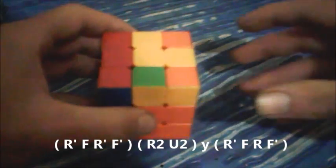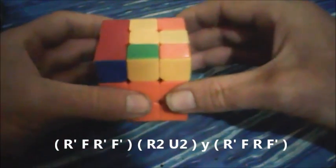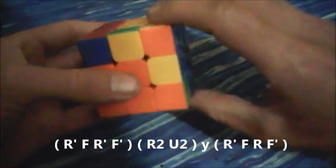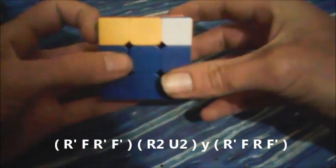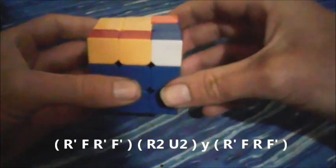So go through it twice more so you can follow along. R' F R' F' R2 U2 while doing the Y, R' F R F'.